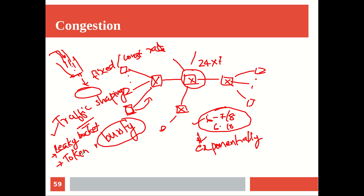Token bucket is a variation of leaky bucket where instead of letting traffic come out at a constant rate, we have a concept of tokens being generated at a constant rate. Using the same bucket-and-tap analogy — instead of a leak letting information out at a fixed rate, tokens are generated at a fixed rate, say 10 tokens per second. Each packet from the application can take a token to come out of the machine. So whenever a packet wants to leave your machine, a token must be available. Since tokens are generated at a fixed rate, packets also come out at a fixed rate.